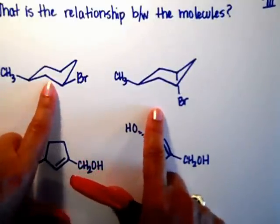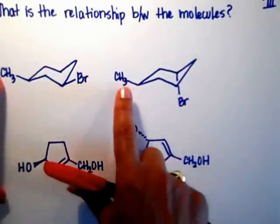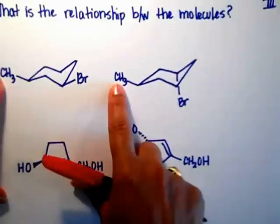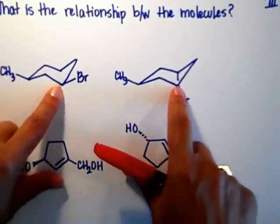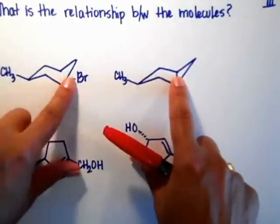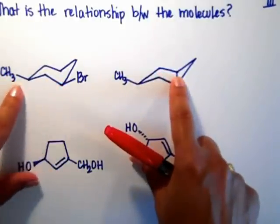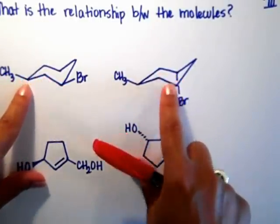So each chair has a Br, a bromide, and each chair has a methyl. Then you actually see what's the distance between the methyl and the bromide atom: one, two, three.